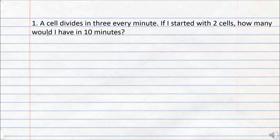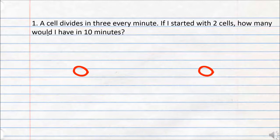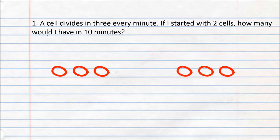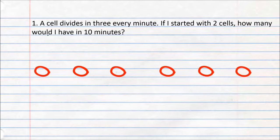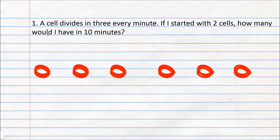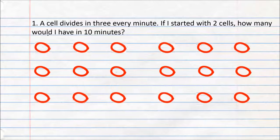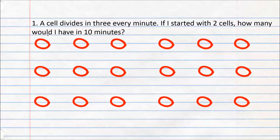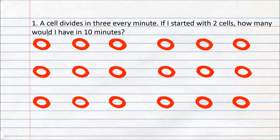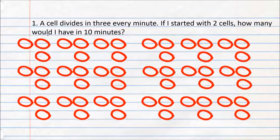Let's start from scratch and actually draw it out. We are starting with 2 cells at the beginning. Since each cell divides into 3 every minute, we'll have 6 cells after the first minute, followed by 18 in the next minute, and then 54 by the third minute. And I can't be bothered counting anymore.